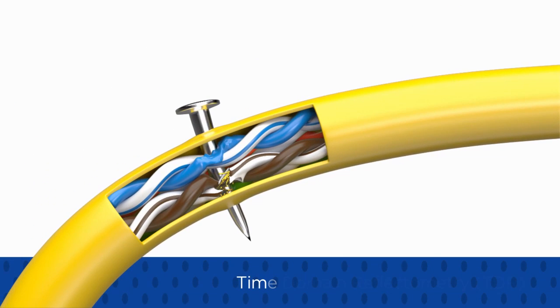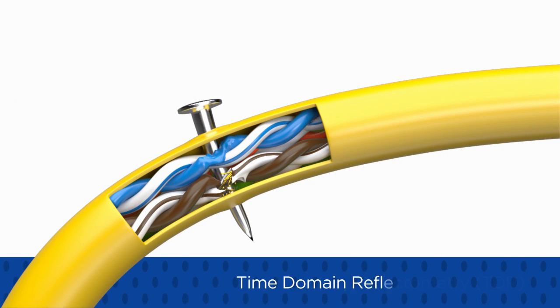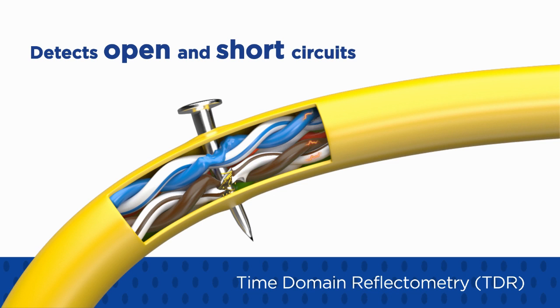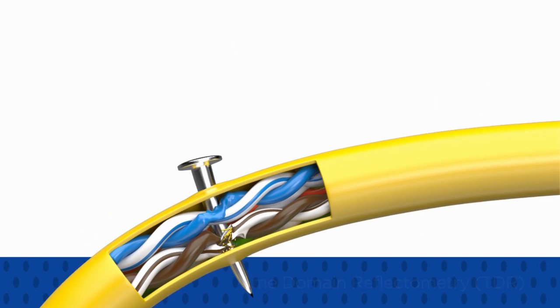SignalTex CT also uses Time Domain Reflectometry, or TDR, that helps locate common wiring faults such as open and short circuits, which are a common cause of network downtime and slow transmission speeds.